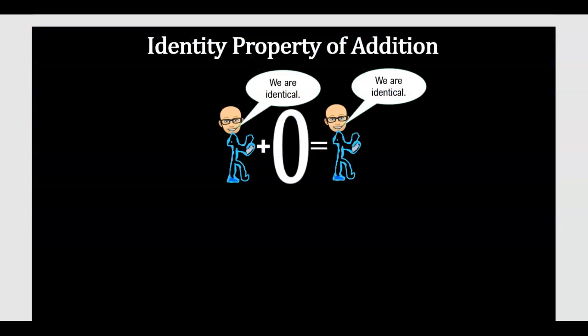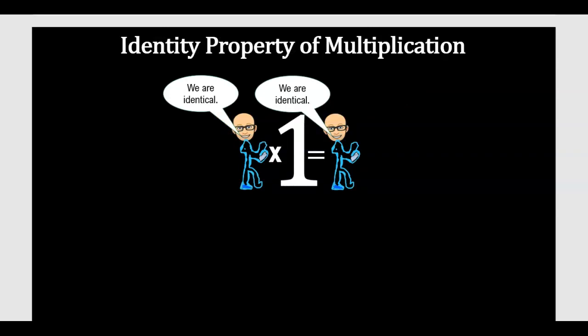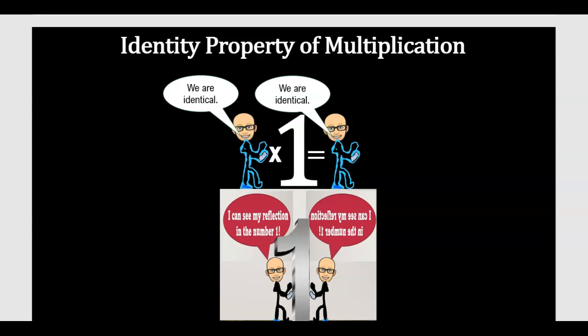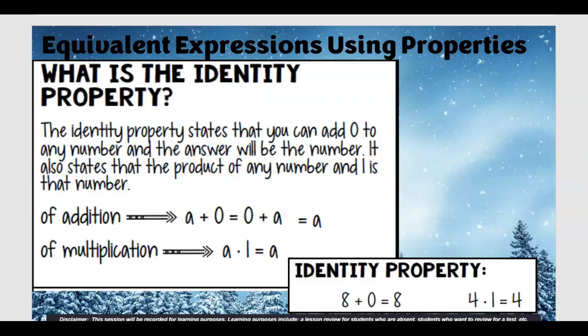Identity property — you don't really need to know this right now except to eliminate it from multiple choice. Identity property of addition uses zero: add zero and you're still identical. Identity property of multiplication uses one: multiply by one and you still have just one of the same thing — it's a reflection.